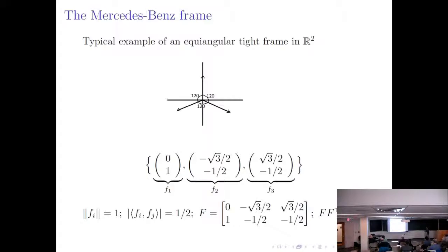The most popular example of an equiangular tight frame is the Mercedes-Benz frame — three vectors 120 degrees apart, which you can think of as the cube roots of unity or the vertices of an equilateral triangle inscribed in a unit circle. They are all unit norm, and the inner product between any two is negative 1/2 (absolute value 1/2). The matrix F whose columns are these vectors satisfies FF^T equals a multiple of the identity, and that multiple is n over d — the size divided by the dimension.